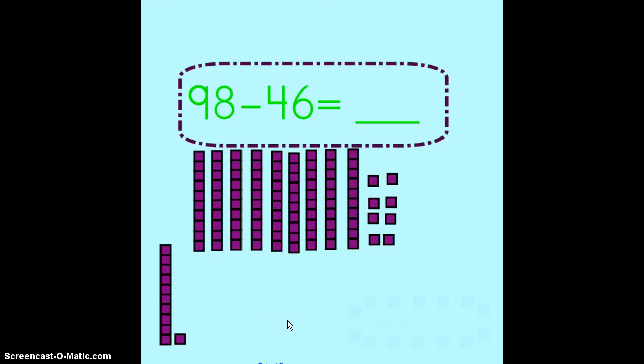Remember, just like when we add we start in the ones place we're going to do the same when we subtract. Always subtract the ones place first. I see that I have the number 46 that needs to be taken away. So I'm going to start with the ones and I need to take away six ones. This time I'm going to x out six ones.